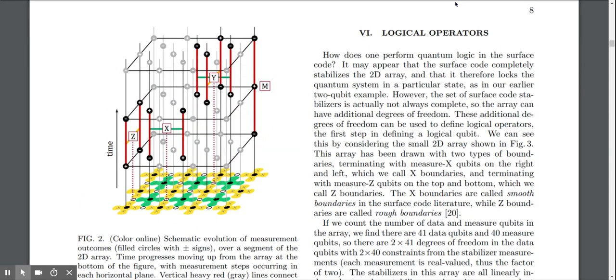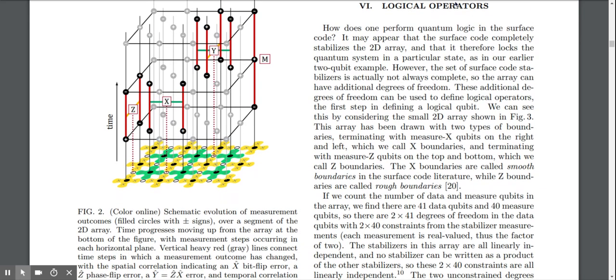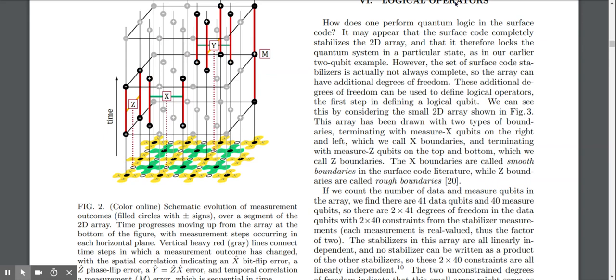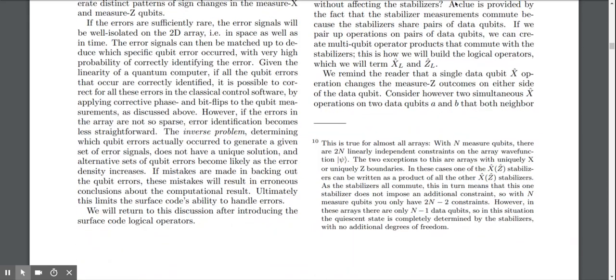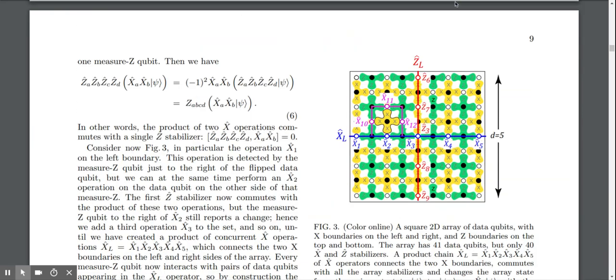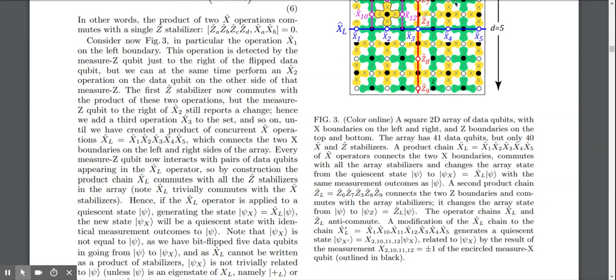Logical operators. How does one perform quantum logic in the surface code? It may appear that the surface code completely stabilizes the 2D array, and that it therefore locks the quantum system in a particular state, as in our earlier two qubit example. I really don't understand this.